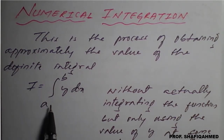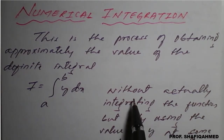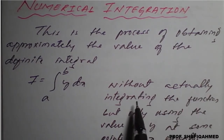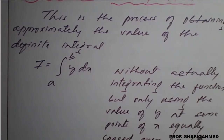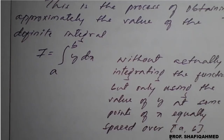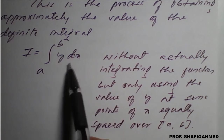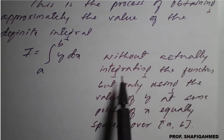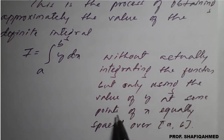What is the definite integral here? It is I equals the integral from a to b of y dx. Here, without actually integrating the function, but using the value of y at some points of x equally spaced over the region from a to b, we simplify this integral using only those values of y at some points of x equally spaced over a and b.